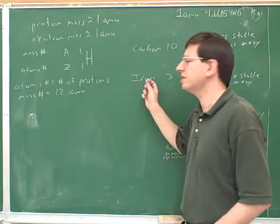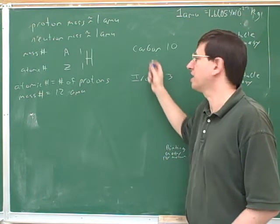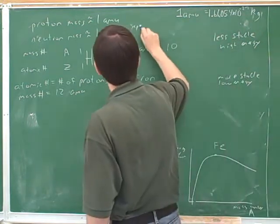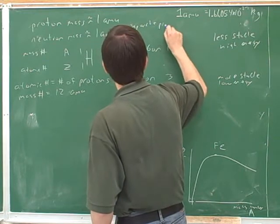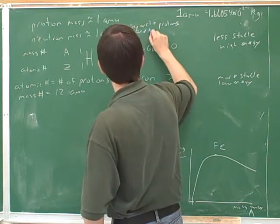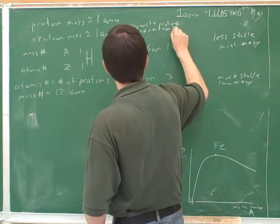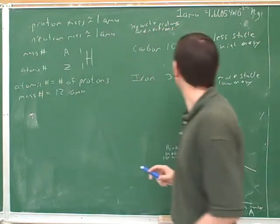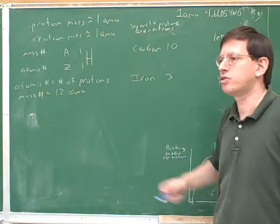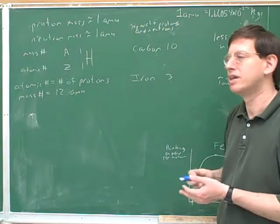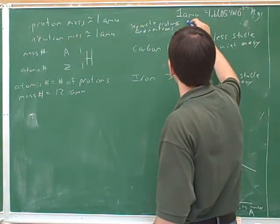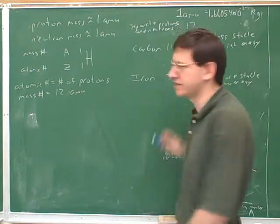We could imagine splitting these up into just separate protons and neutrons. It turns out that that's the least stable of all. Protons and neutrons like coming together in a nucleus, so I'll give this the biggest number — say, 17.